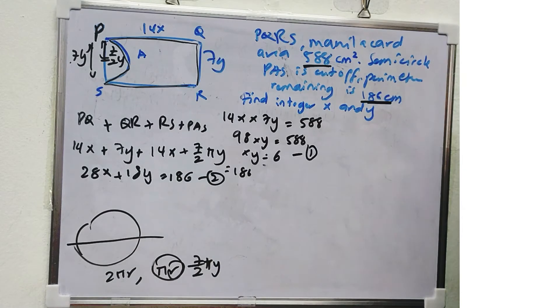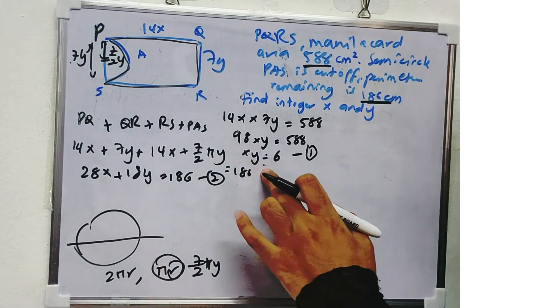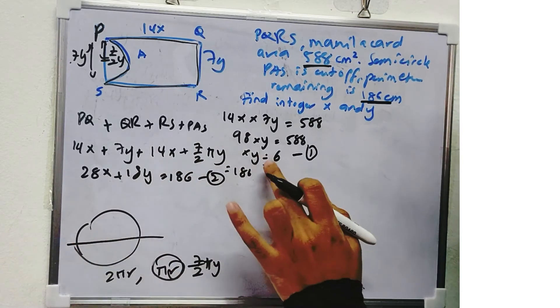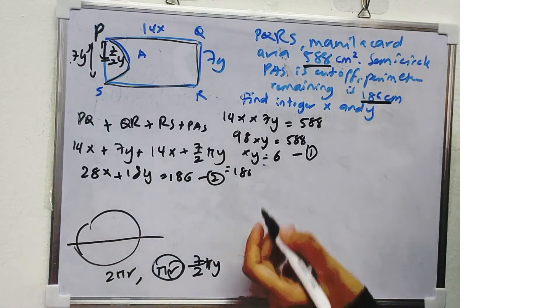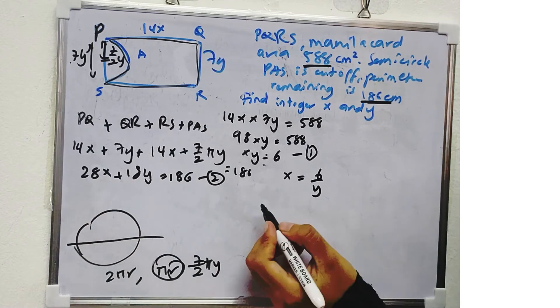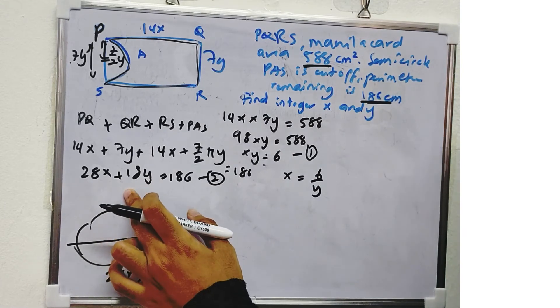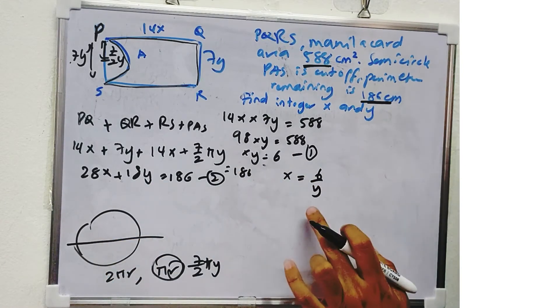So we have 2 equations here. So in terms of X or Y, it will be the same. Either you get X, you have to substitute. Or you get Y, you have to substitute. So X is equal to 6 over Y. So we can take Y will be much easier because you have a smaller number.